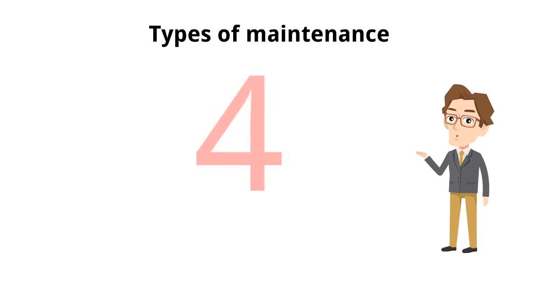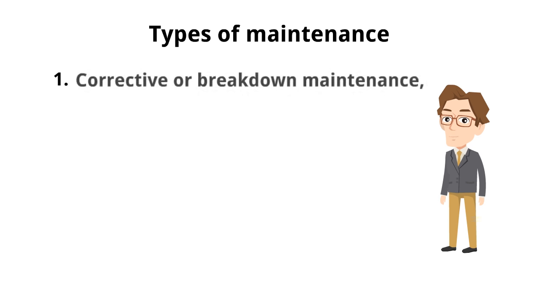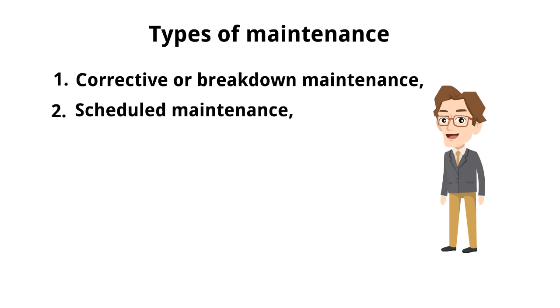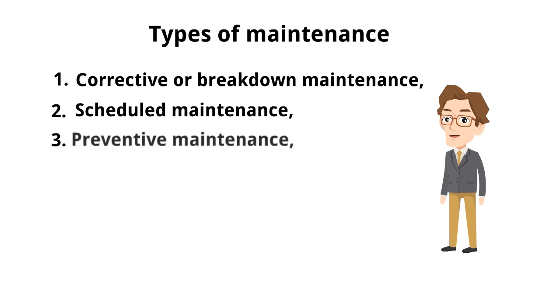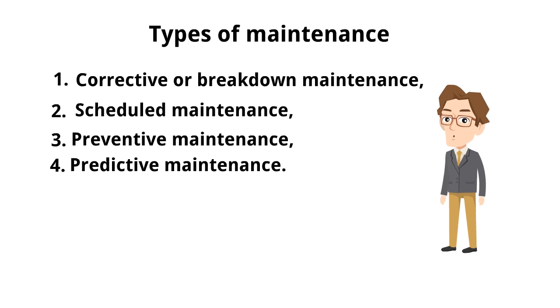Maintenance can be classified into four categories: 1. Corrective or breakdown maintenance. 2. Scheduled maintenance. 3. Preventive maintenance. 4. Predictive maintenance.